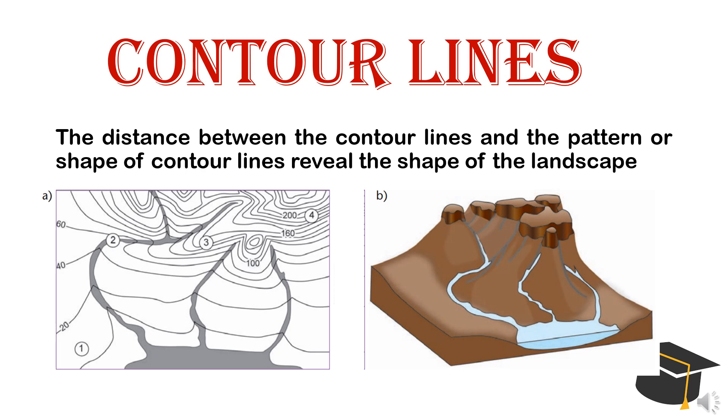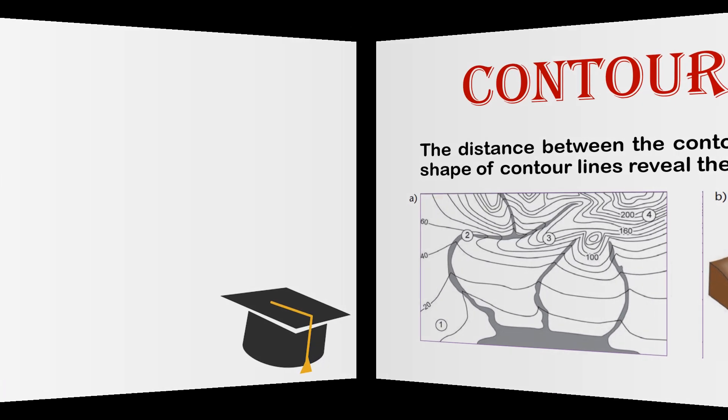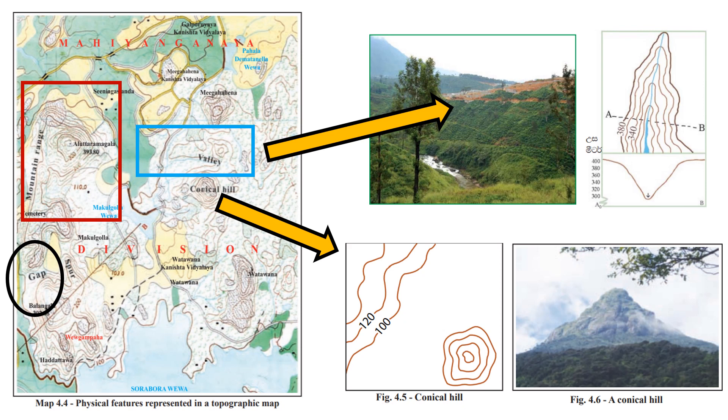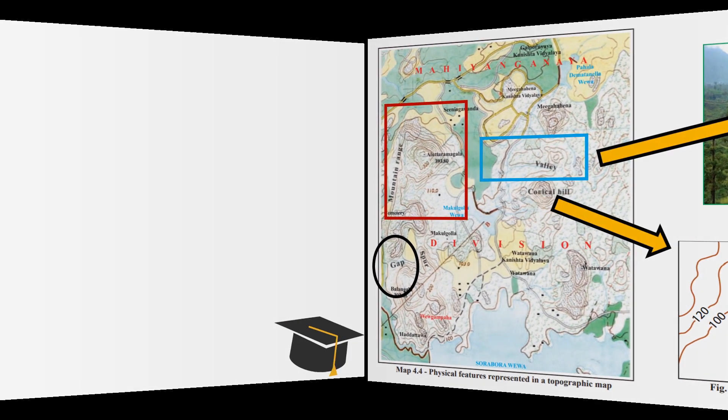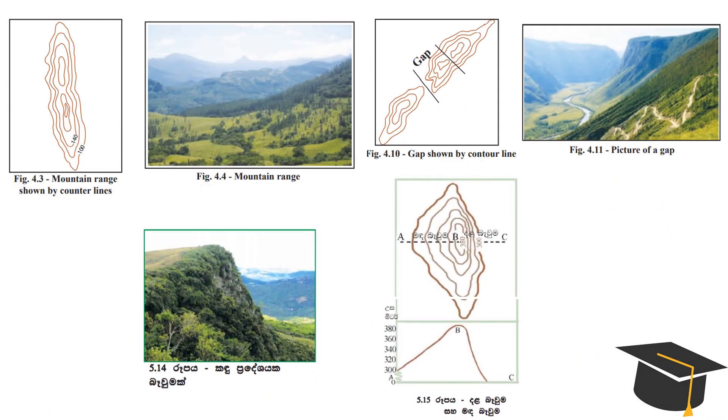If you study this diagram, picture one represents the contour lines which are drawn in two dimensions. The second picture shows the same relief features in three dimensions. Here is a part of a metric map. According to this metric map, topographic features like valley, conical hill, mountain range, gap, slopes, etc. are represented. Moreover, this picture shows contour line patterns and their real features. So it is clear that by referring to these contour lines you can get a clear idea about the relief feature.